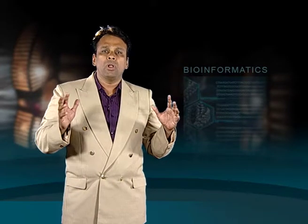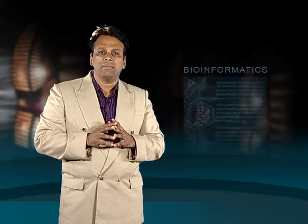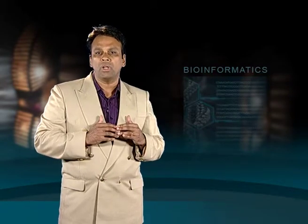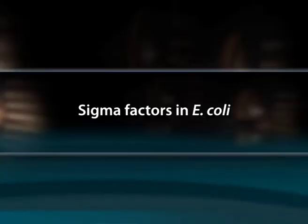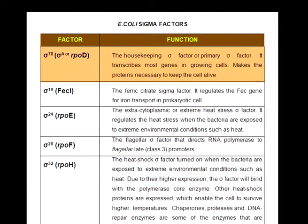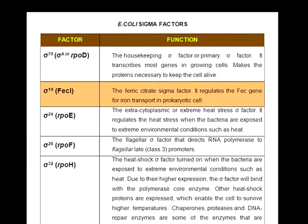To explain the role of sigma factor in E. coli under different environmental conditions: sigma 70, also called sigma-A or RPOD, is the housekeeping or primary sigma factor — it transcribes most genes in growing cells and makes the proteins necessary to keep the cell alive. Sigma 19, the ferric citrate sigma factor, regulates the ferric citrate gene for iron transport. Sigma 24 is the extra-cytoplasmic or extreme heat stress sigma factor.